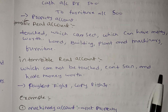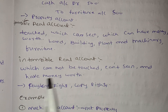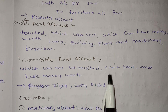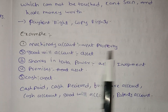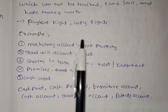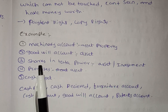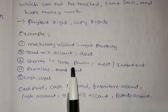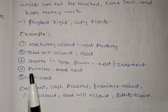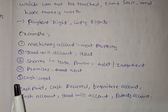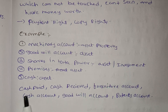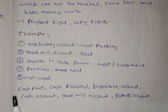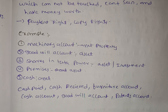Intangible real accounts include patents, rights, copyrights, and goodwill. For example: machinery account is an asset — tangible real account. Goodwill account is an asset — intangible real account. Shares, investments, premises, cash received — these are also real accounts. Cash paid, cash received, furniture account, goodwill, patents — all are real accounts.